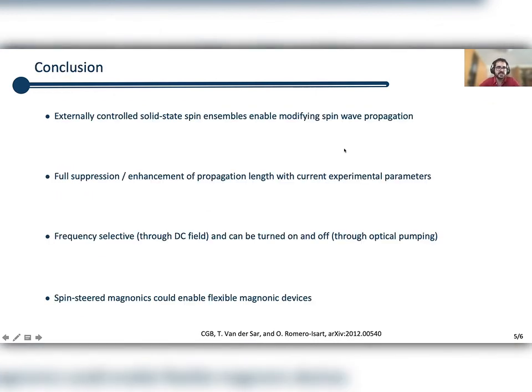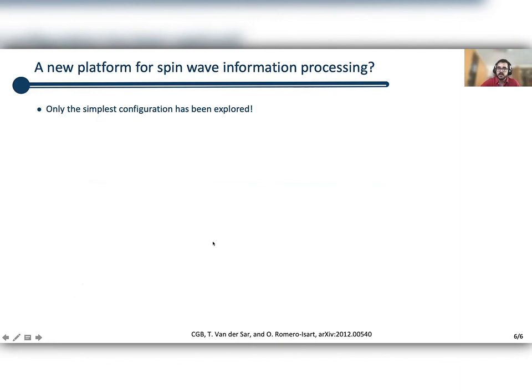So this is my conclusions. As I told you, externally controlled solid state spin ensembles can enable modifying the spin wave propagation in multiple ways. In particular, I have shown you we can fully suppress and enhance the propagation length with current experimental parameters. I have shown you that this is frequency selective through the DC field, which means I can choose which spin wave mode I want to modify, and I can choose to turn on and off even dynamically the modification of the spin wave propagation properties. It is our hope, and this is what we're working on right now, that this concept of spin-steered magnonics is going to enable flexible magnonic devices.